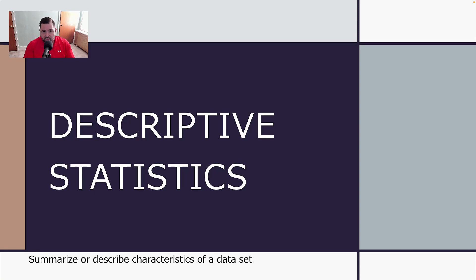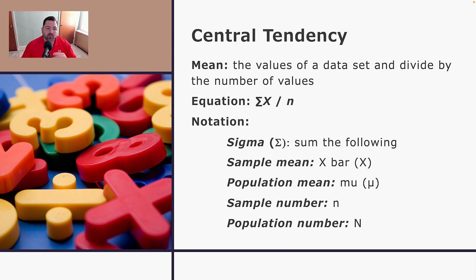In this video, we're going to talk about descriptive statistics. Descriptive statistics is all about a way to summarize our data or describe our data with one numerical value. The common way that you all learned in middle school and high school is that we use a type of descriptive statistic known as central tendency.